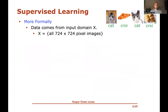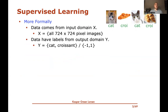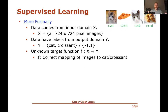More formally, we assume the data comes from some input domain X — for instance, all 724 by 724 pixel images — and the labels come from an output domain Y, such as {cat, croissant}. For binary classification, we typically think of output labels as being −1 or +1. There's also an unknown target function f that assigns the correct labels to the input domain.